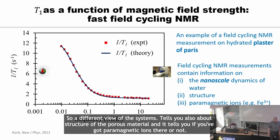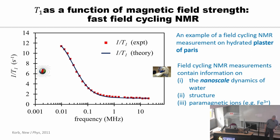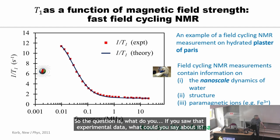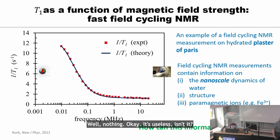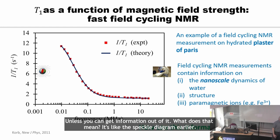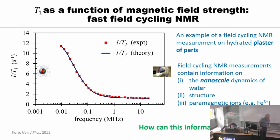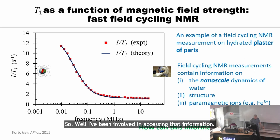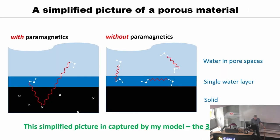This technique tells you about the structure of the porous material and whether you've got paramagnetic ions. But if you just saw that experimental data, what could you say about it? Well, nothing — it's useless unless you can get information out of it. It's like the speckle diagram earlier. I've been involved in accessing that information.